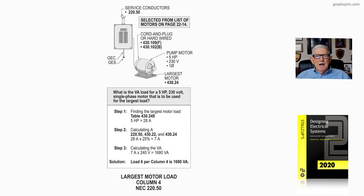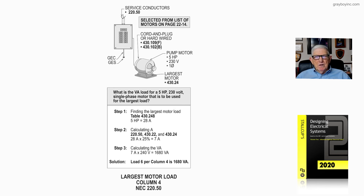We take 25% of the largest motor, which was 28 amps — selected from that list on page 22-14. When we do the math, 25% of 28 amps, we come up with 7 amps.